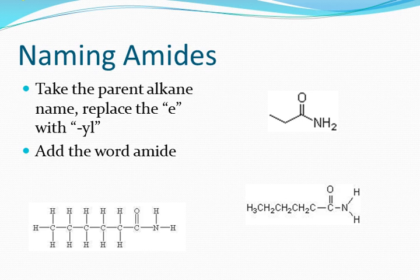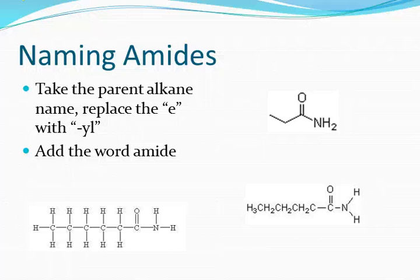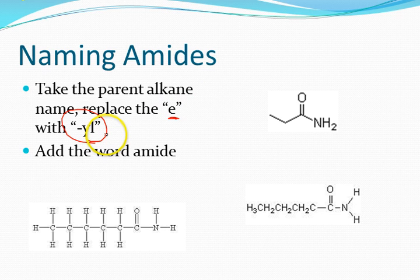Now we're going to name some very simple amides. It's actually pretty easy to do. You look at the formula and you find the longest continuous chain, whatever that alkane group would be, however many carbons correspond. You take the E off at the end, put YL in the end, replace it with YL, add the word amide. Really very nice and simple.